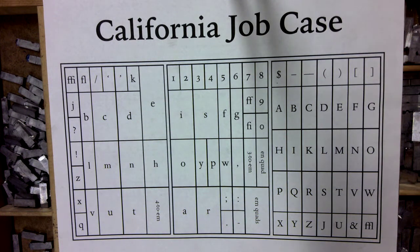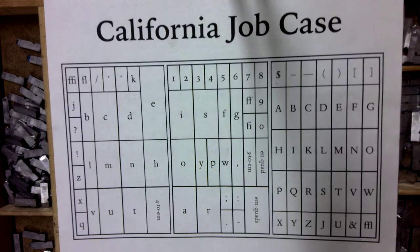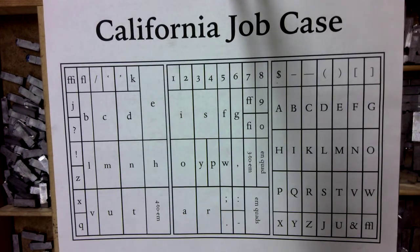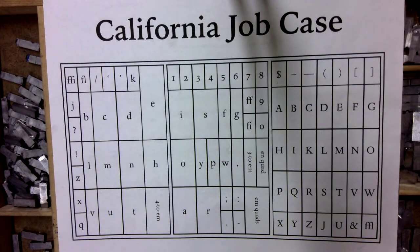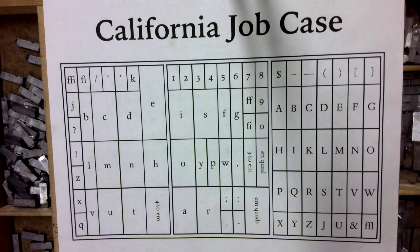The drawers of type that we're going to be working with are organized along the scheme known as the California Job Case. A Job Case is just a tray that organizes and holds a particular font. Originally there were essentially two cases — one for the minuscule letters and one for the capital letters, and there were literally a lower and an upper case. So when you were setting type, the minuscule letters would be in the lower case and the capital letters in the upper case. That's where these terms come from.